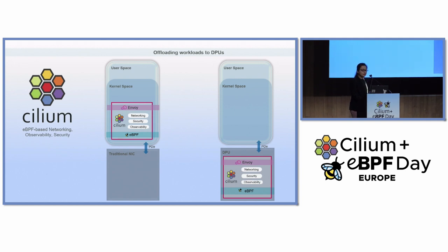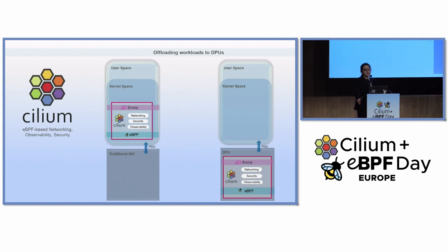DPUs are specialized hardware outside your servers. Modern DPUs are capable of efficiently handling all layer 4 and layer 7 related processing, like mTLS, transparent encryption and decryption, layer 4 load balancing — most of which directly overlaps with the features provided by Cilium. That's why the first functionality we targeted was layer 7 processing, which is done by Envoy today.